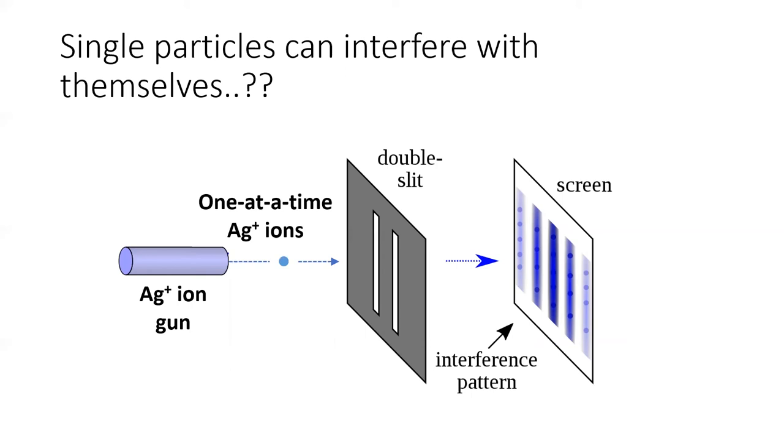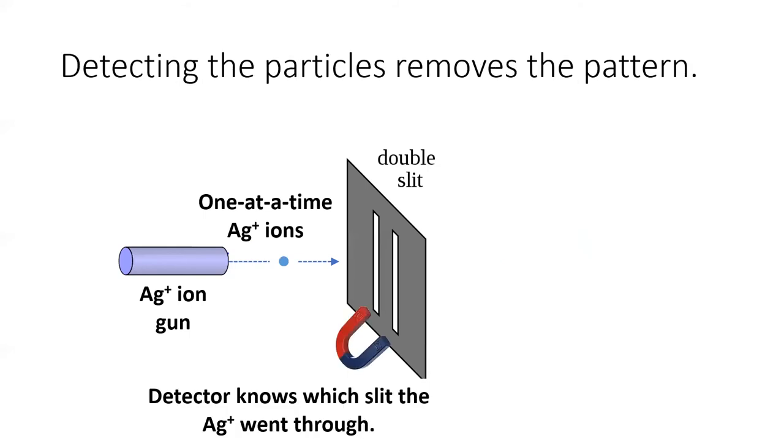But this isn't even the craziest. It gets even crazier than this. So silver ions have a charge, and when charged particles move, they develop a magnetic field. So scientists thought to put little magnets next to each slit, and that way the magnet will detect which slit the particle goes through, and they can check to make sure it's not interfering or interacting with anything that goes through the other slit.